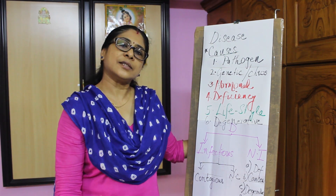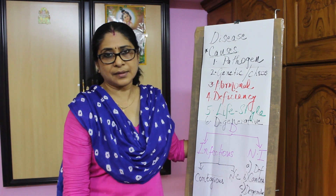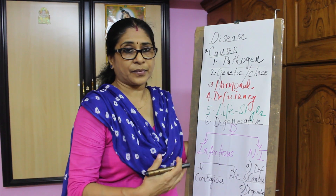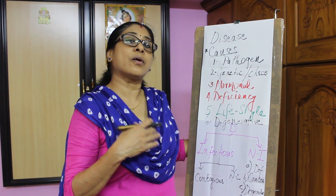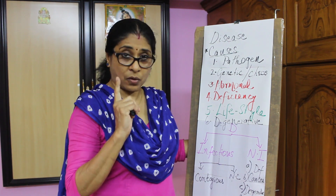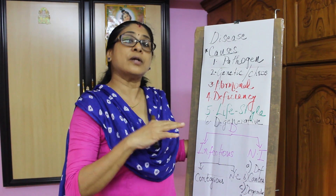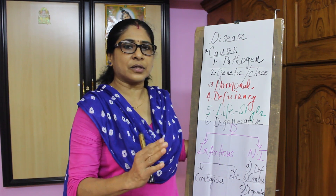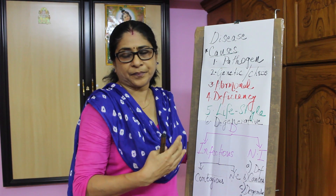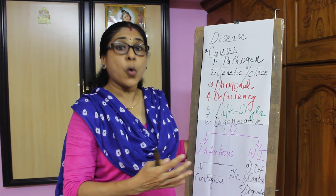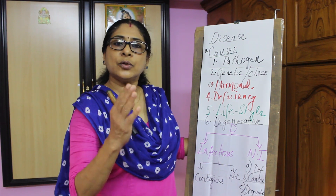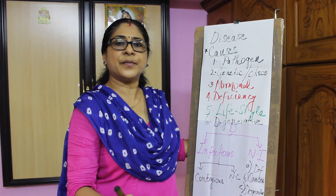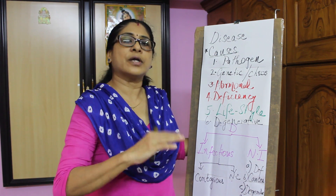We have actually discussed what health is. But today, let us discuss what is a disease. A disease is defined as a disorder of an organ or an organ system. For example, suppose you have cataract — it is the disorder of the eye, the organ eye. However, the infamous COVID disease is one where the entire respiratory system is affected. So a disease can either be a disorder of an organ or an organ system.